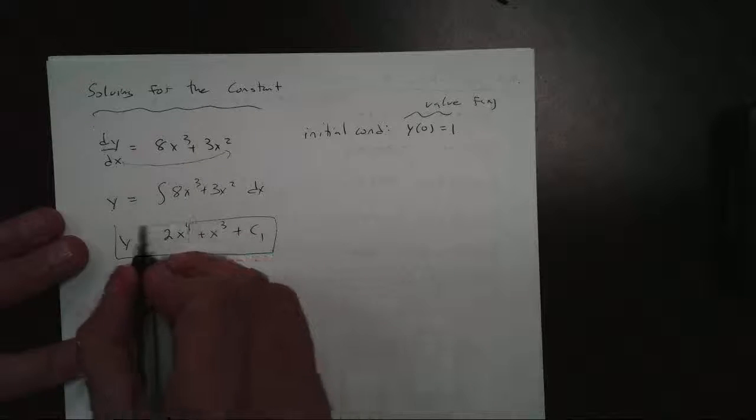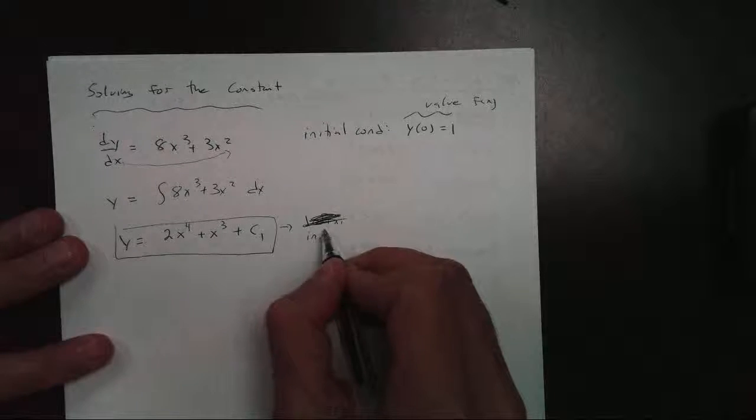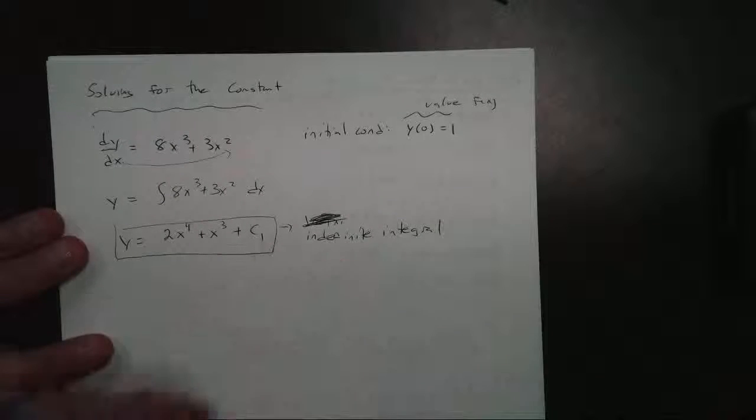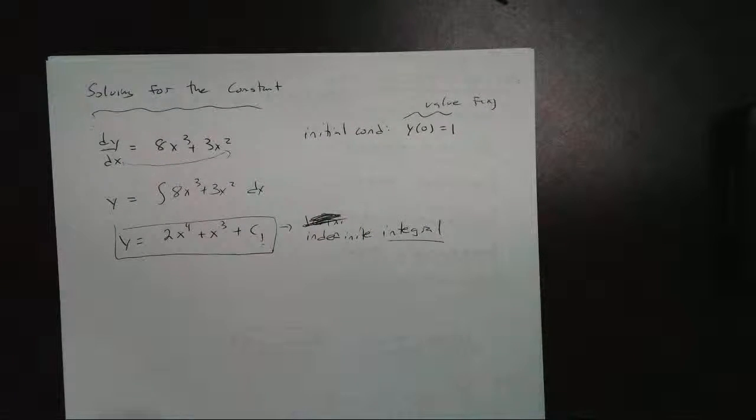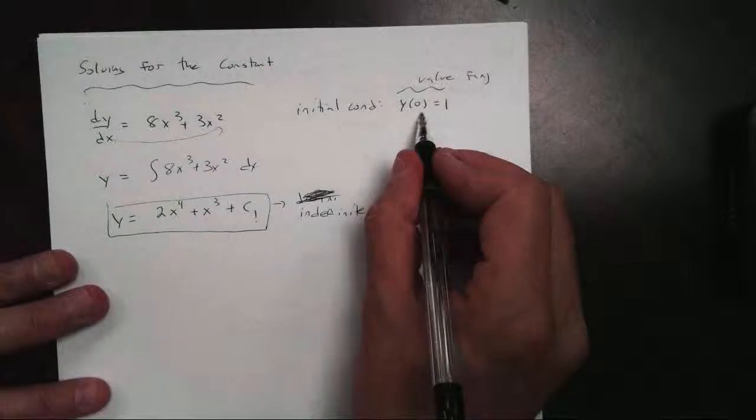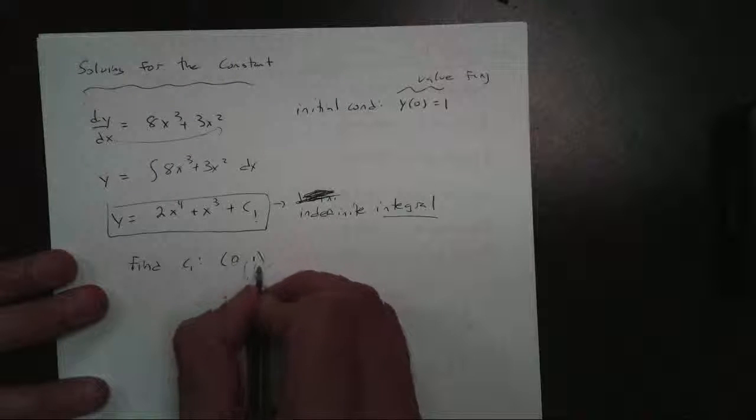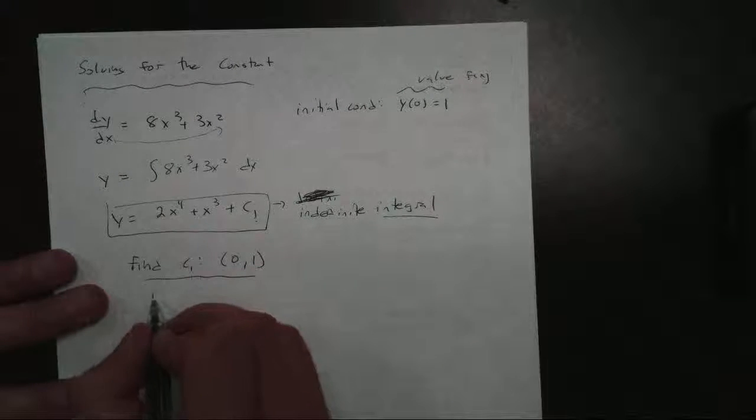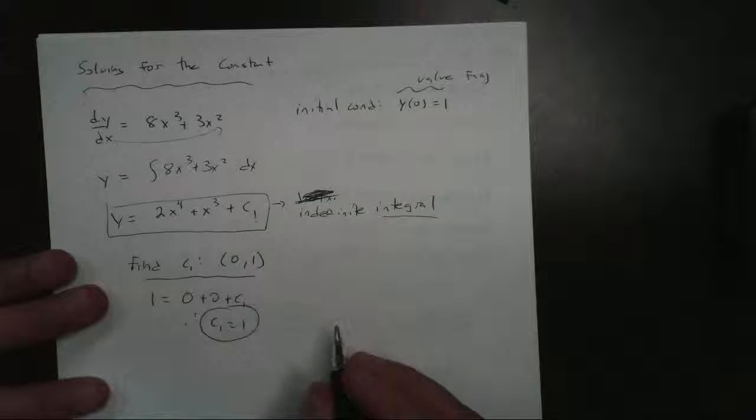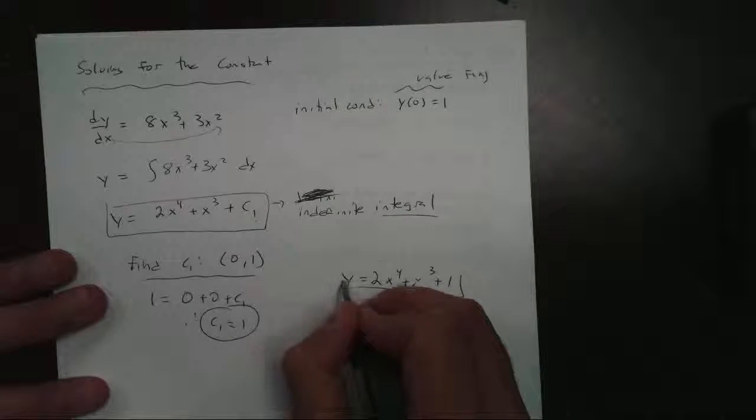Now this is my antiderivative. It has a special name for it. We call this an indefinite integral. Now what that means is I don't know what c is. It's indefinite. Now integral is just a term we use for antiderivatives. They're synonymous with each other, so we'll use them back and forth. But because I know an initial condition, I can solve for c. So to find my value c1, I'm going to use the point they gave me, 0 comma 1. I just plug it in. 1 equals 0 plus 0 plus c1. So therefore c1 is 1. And now I've got my function. y equals 2x to the 4th plus x cubed plus 1. And there's my function. And that's how we solve these.